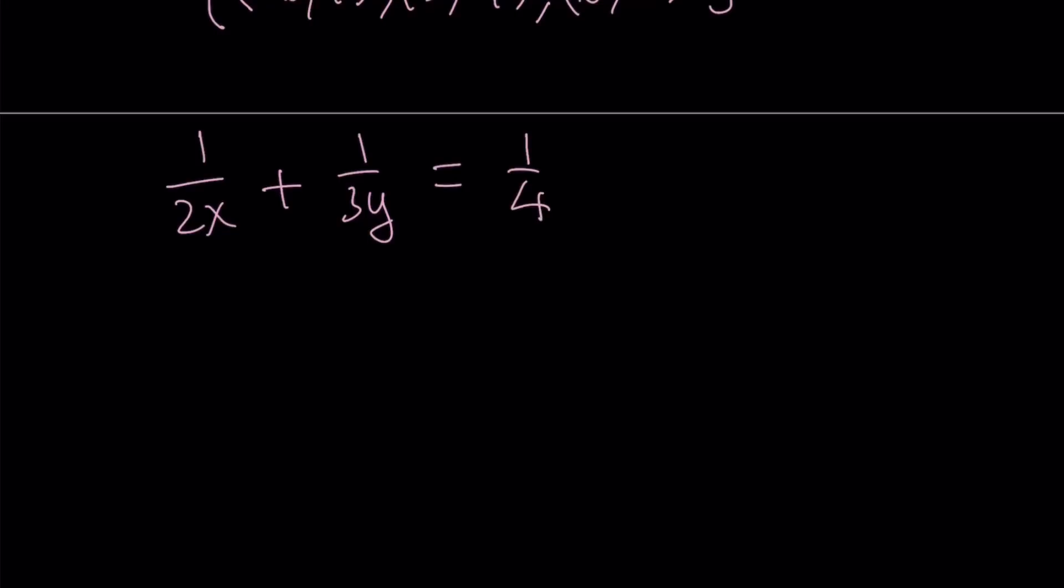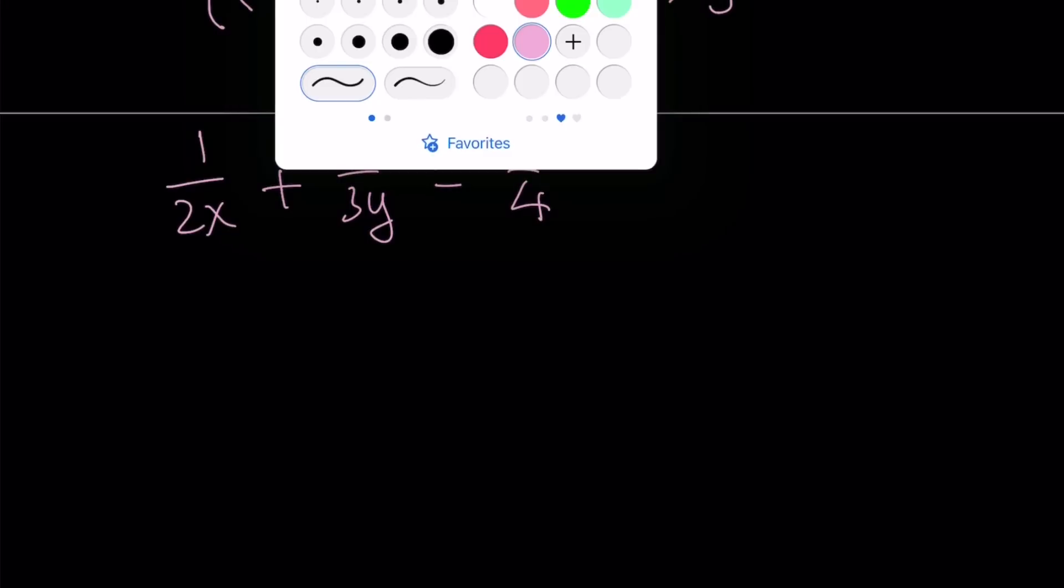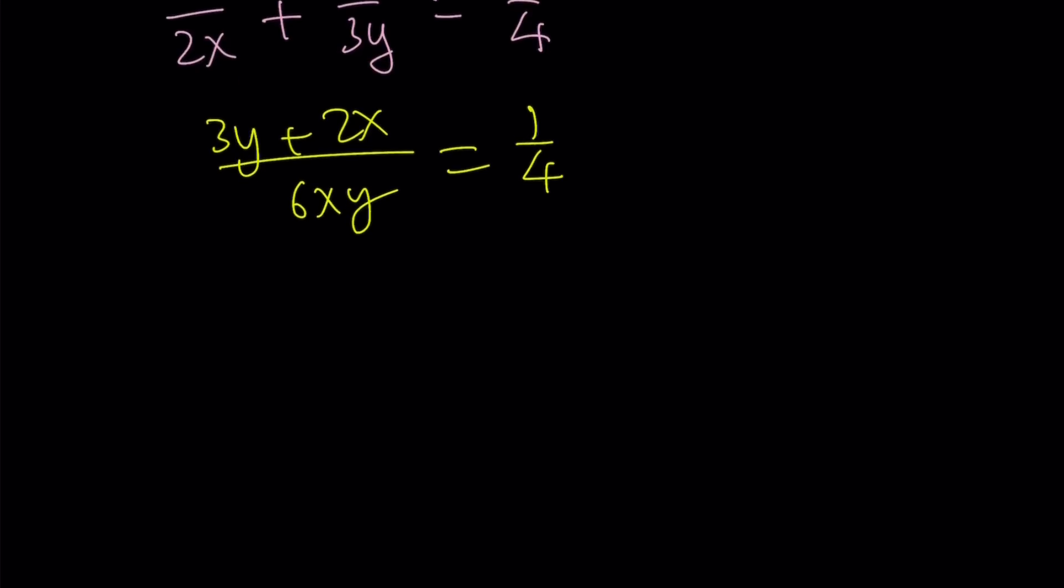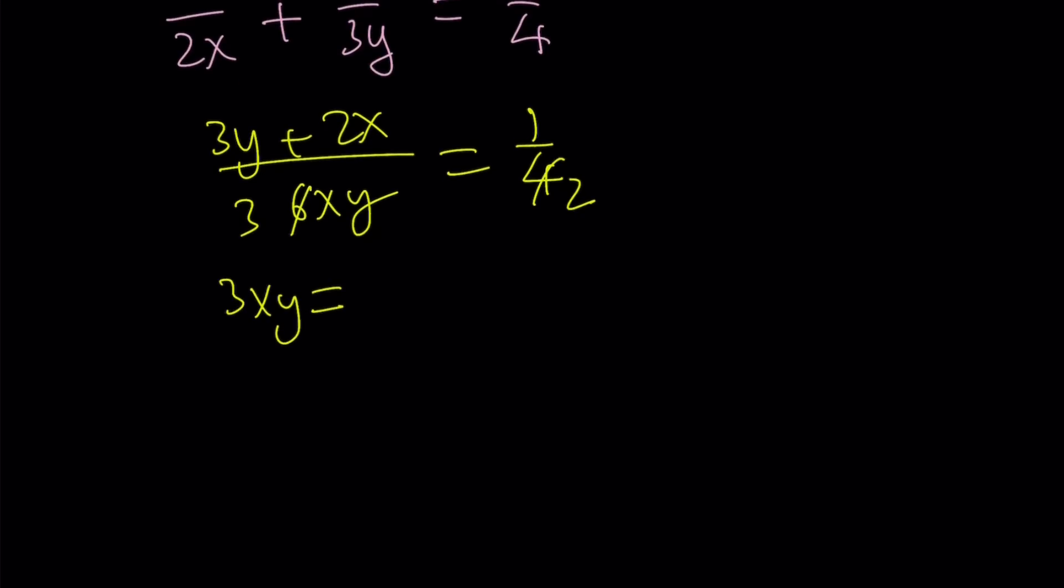We can just go ahead and make a common denominator like before. So that would look like 3y plus 2x over 6xy equals 1 fourth. Let's go ahead and isolate y here. 1 over 3y equals 1 over 4 minus 1 over 2x. Make a common denominator. Multiply by x and multiply by 2. So that's going to be x minus 2 over 4x.